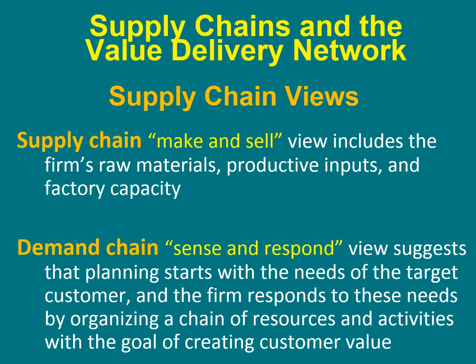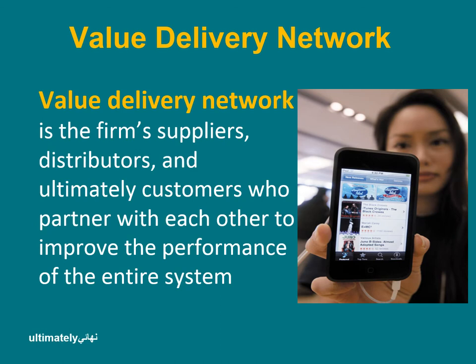There are two types of supply chain views. The make-and-sell view includes the firm's raw materials, productive inputs, and factory capacity. The sense-and-respond view suggests that planning starts with the needs of the target customer, and the firm responds to these needs by organizing a chain of resources and activities with the goal of creating customer value.